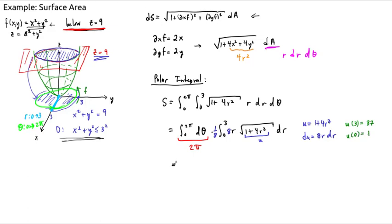So our integral now becomes, we've got a 2 pi, which we computed, times 1 eighth. So that just cancels to become pi over 4. The integral is now equal to the integral from 1 to 37 of the square root of U, dU.